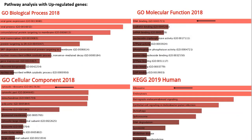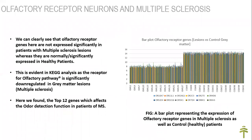The pathway analysis with upregulated genes shows the top hits as protein synthesis pathways, oxidative phosphorylation, and RNA binding pathways. We can clearly see that olfactory receptor genes are not expressed significantly in patients with multiple sclerosis lesions, whereas they are normally and significantly expressed in healthy patients. This is also evident from our KEGG analysis, where the receptor for the olfactory pathway is significantly downregulated in gray matter lesions. We were successful in identifying the top 12 genes affecting odor detection function in MS patients.